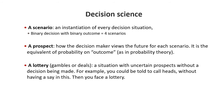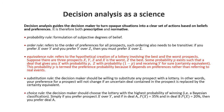A prospect is how the decision maker views the future for each scenario — in that case we could say a quarter for each scenario seems like a reasonable definition for a prospect. A lottery, also called a deal, is a situation when you have an uncertain prospect but you don't have a say in the decision. For example, you are told to call heads but have no say in this — in other words, you face a lottery.